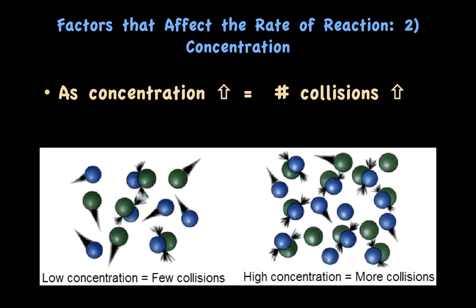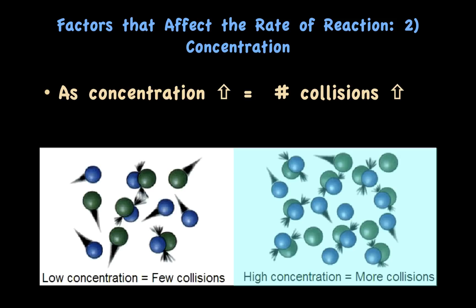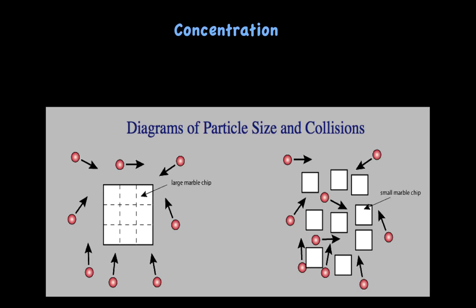The second factor is concentration. As concentration increases, the number of collisions increases. Looking at the diagram, low concentration means few collisions because there are fewer reactant particles to collide with one another. When you have a high concentration of reactant particles, there are going to be more collisions — they bump into each other more frequently.